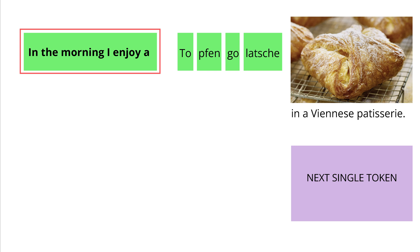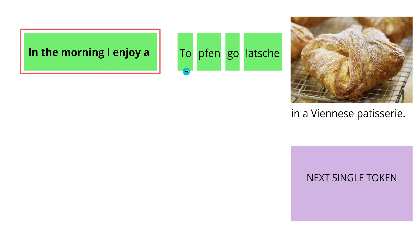Imagine what we have. We have a string of text, a sentence that starts with: 'Hey, in the morning, I enjoy air.' Now our large language model will predict the next token. The next word in the sentence is 'Topfengolage' in a Viennese patisserie, but the token is 'toe.' So our autoregressive LLM transformer says: 'In the morning, I enjoy a toe.'